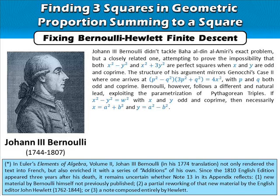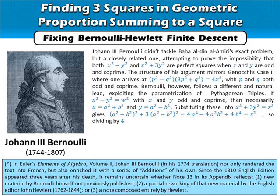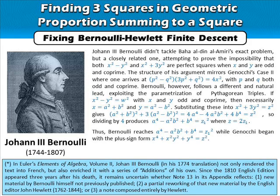Substituting into x² + dy² = z² and expanding the terms gives 4a⁴ - 4a²b² + 4b⁴ = z². Dividing by 4 produces a⁴ - a²b² + b⁴ = z₁², where z = 2z₁. Thus Bernoulli reaches the equation a⁴ - a²b² + b⁴ = z₁², while Genocchi began with the plus-sign form.